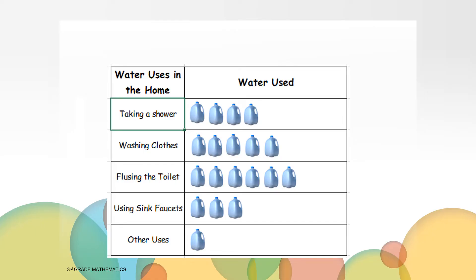These are the five subheadings: taking a shower, washing clothes, flushing the toilet, using sink faucets, and others. Which subheading do you think washing hands and brushing teeth falls under? Yes, using sink faucets.